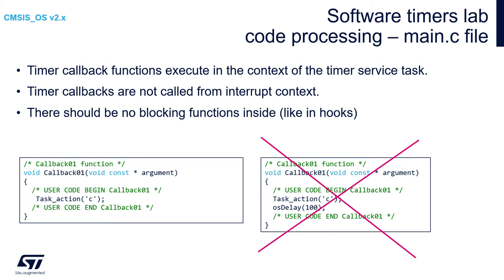During project creation we specified the name of the callback function used by the timer as callback01. An empty callback function is generated by STM32CubeMX or STM32CubeIDE. We need to fill in the code inside this callback. In general, timer callback functions execute in the context of the timer service task. Those callbacks are not called from the interrupt context and should not contain any blocking functions. The structure of those functions is very similar to hooks implementation described within the advanced topics part of this training. We need to put inside the callback function a short action - for this we will use our task action function with an argument 'c'.